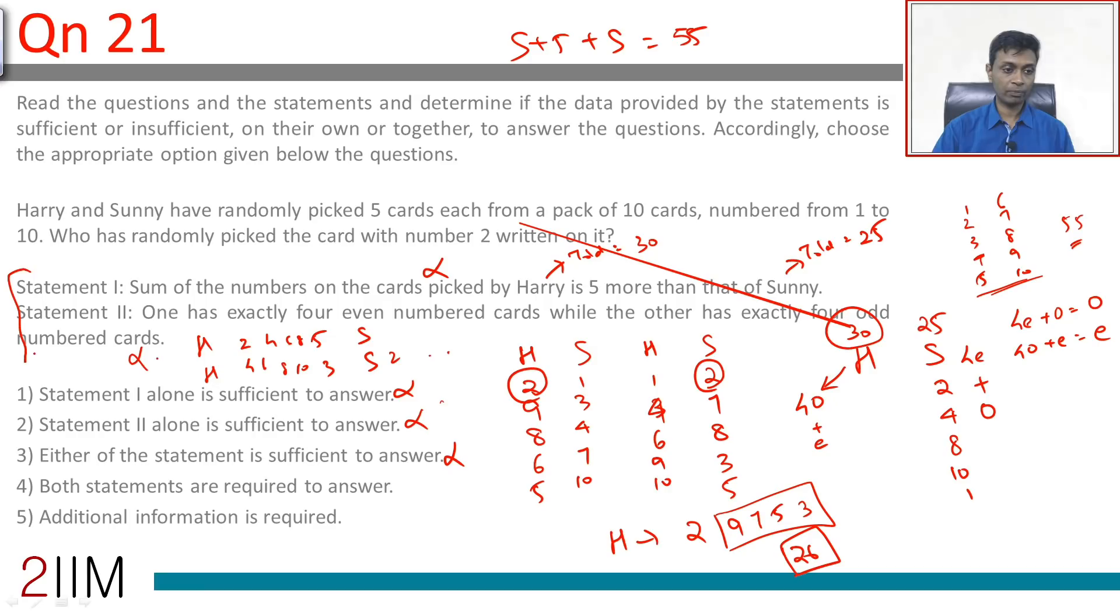If we use both of these put together, then we can confidently say that Sonny has the 2. If the sum total of Harry's is 5 more than that of Sonny, then Harry's total should add up to 30, Sonny's total should add up to 25. That means Harry has 4 odd numbers and an even number.